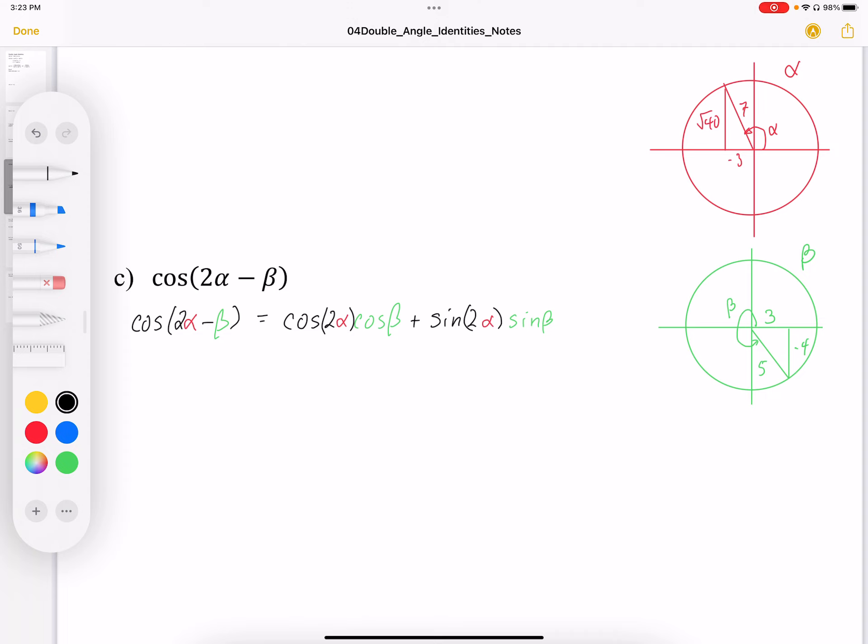So we have a picture for beta. So we're going to be able to replace the cosine and sine beta with the beta to the right. We do not have a picture for 2 alpha, but we have a picture for alpha. So what that means is we need to apply another identity. And once I apply the identity and break down that 2 alpha into a single alpha, we can use the diagram above.